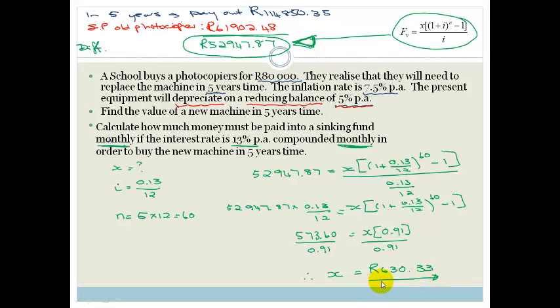So that's not too bad, that you could put away for five years to get your 52,947.87, but I must admit this 13% per annum compound monthly is a really good interest rate. Very few places give that interest rate these days.